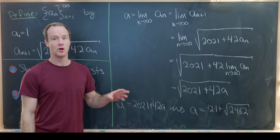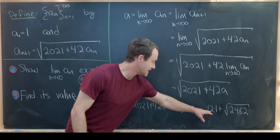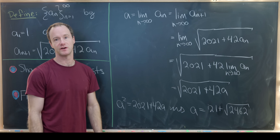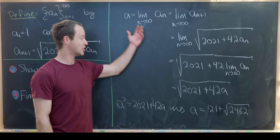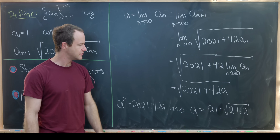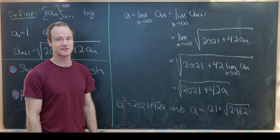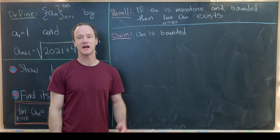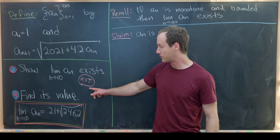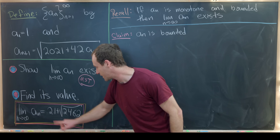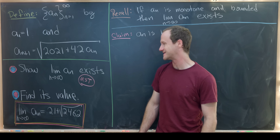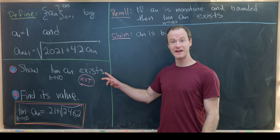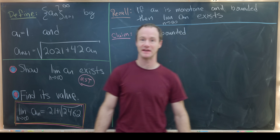What we've shown so far: if the limit exists, then it equals 21 plus the square root of 2462. Now we need to show that this process was legal by actually proving the limit exists. The calculation we just did implies the limit is 21 plus √2462, provided the limit exists in the first place — and now we'll finish by showing it does.